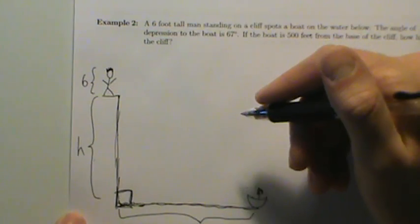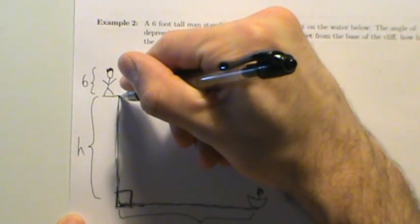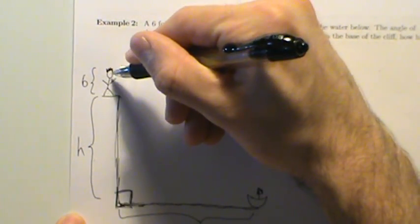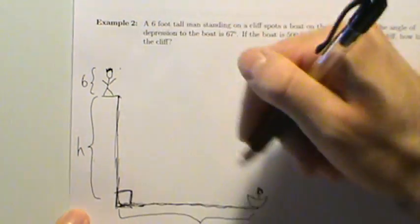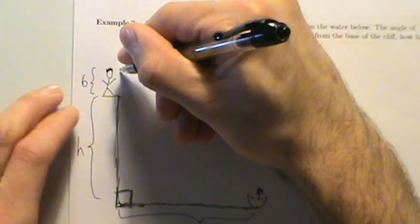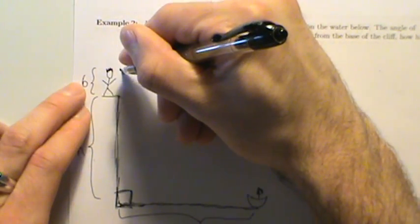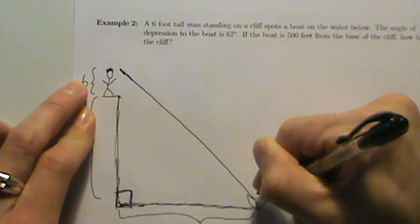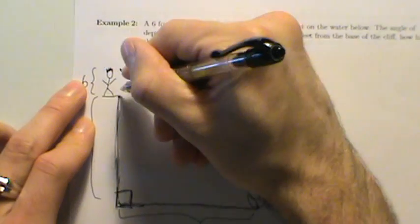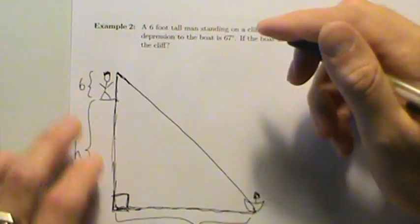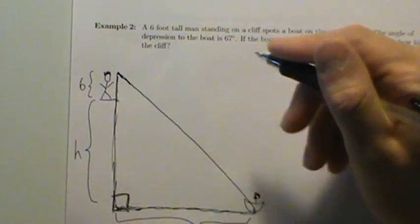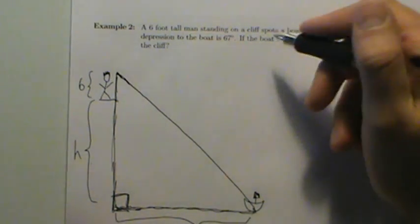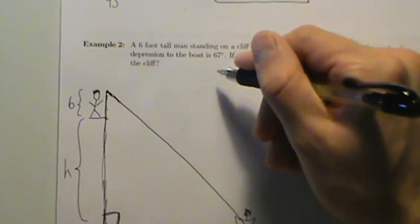Now we have to complete the triangle, but we don't want to draw the line from the base — we want to draw it from up here, because the man spots the boat down below, so we'll draw it from the top of his head. And we can just complete that in there. So now we have this right triangle, and we're told the angle of depression to the boat is 67 degrees.